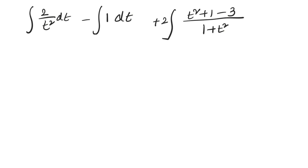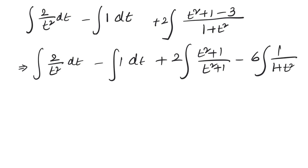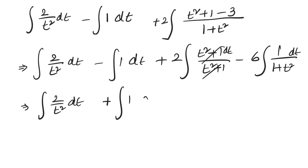In the next step we have integral of 2/t² dt, plus 2 integral of dt, plus 1 integral of dt, minus 6 integral of 1/(1 + t²) dt. Combining the constant integrals, 2 plus 1 gives us integral terms we can evaluate directly. We are almost there — one more step.